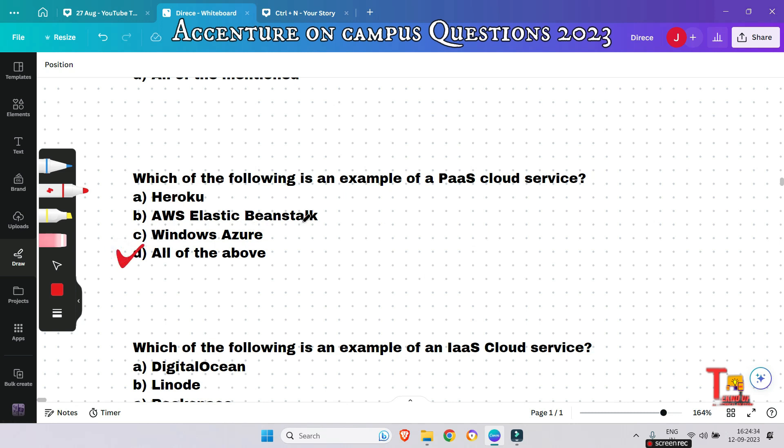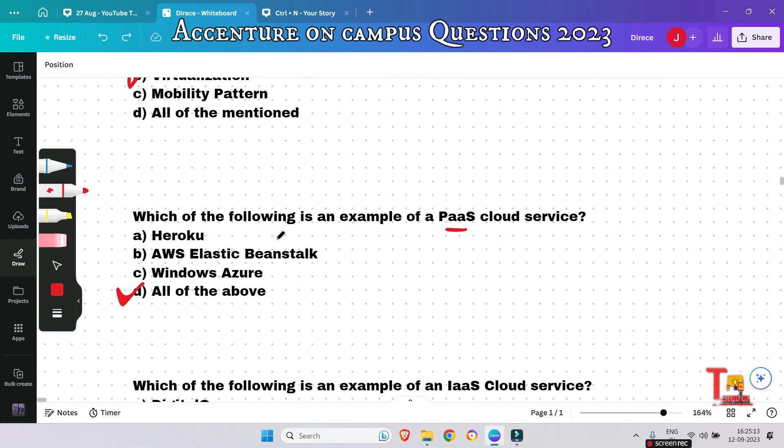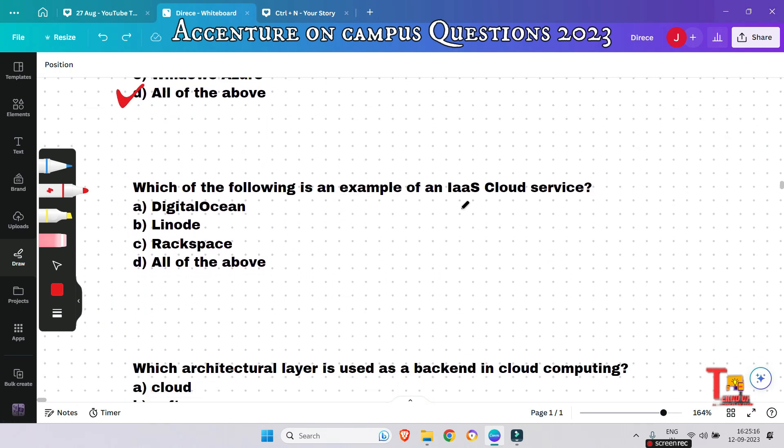The next question is: Which of the following is an example of an IaaS cloud service? I mean Infrastructure as a Service. This will be a quiz question for you. Please pause and give me the answer.